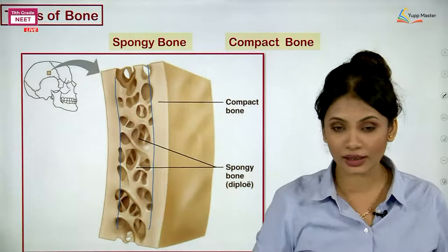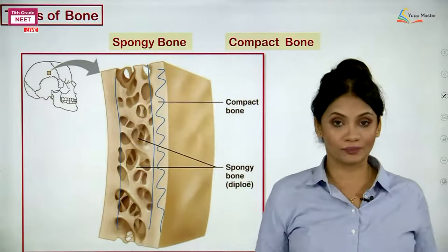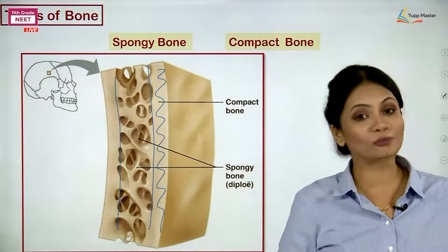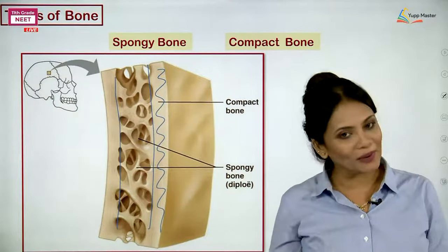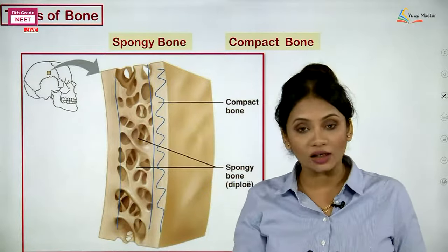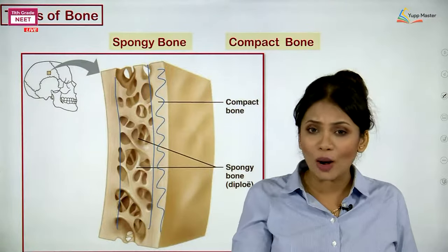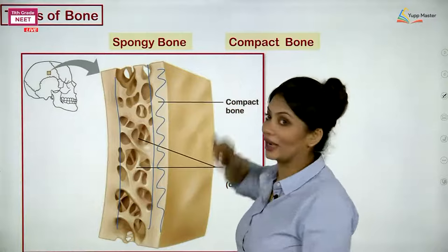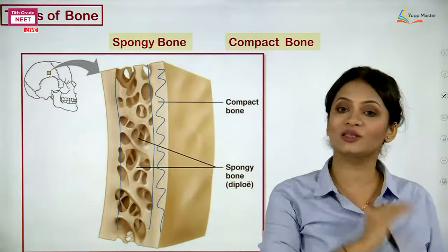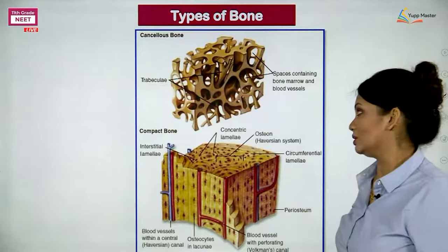Spongy bone is located at the expanded ends of bones, called the epiphysis, while compact bone is located in the shaft region, called the diaphysis. Please note the important term trabeculae for the columns in spongy bone.